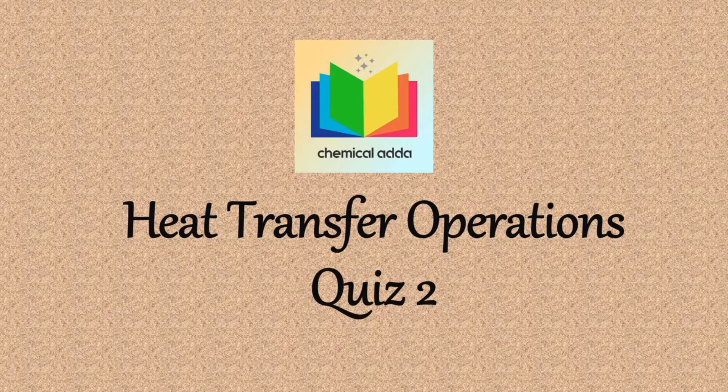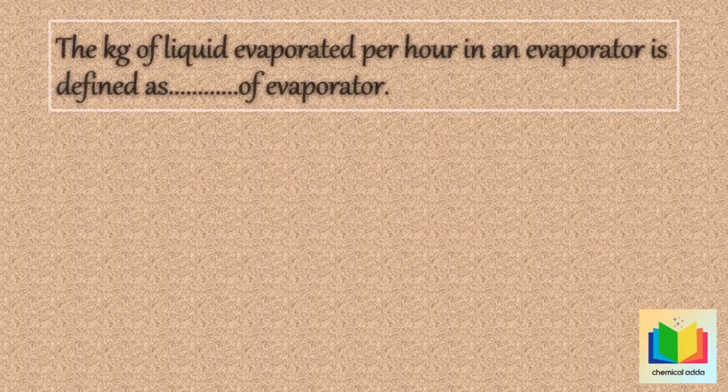Now, let's see the first question. The kilogram of liquid evaporated per hour in an evaporator is defined as dash of evaporator.